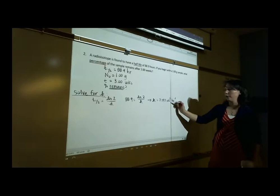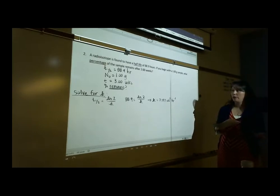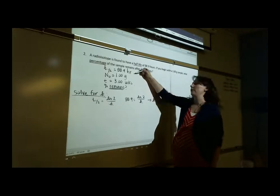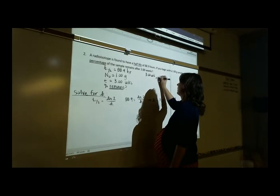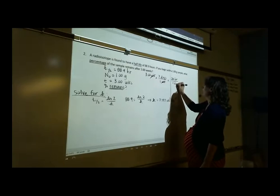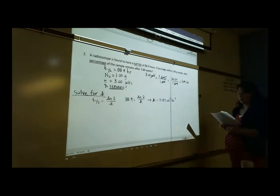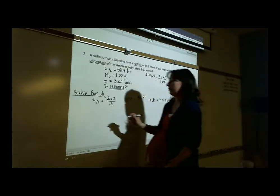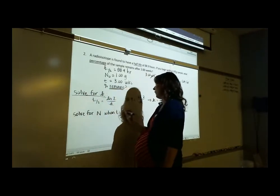We need to make units match: the half-life is in hours and the time is in weeks. Converting 3.00 weeks to hours: 3.00 weeks × 7 days/week × 24 hours/day = 504 hours. Now we solve for n when t = 504 hours. The initial mass is one gram, and we use the first order integrated rate law.